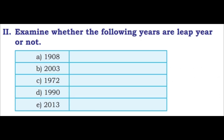Second question: Examine whether the following years are leap years or not. First: 1908 — 8 is divisible by 4, so it is a leap year. Second: 2003 — 3 is not divisible by 4, so it is not a leap year. Third: 1972 — last two digits 72 are completely divisible by 4, so it is a leap year. Fourth: 1990 — 90 divided by 4 leaves a remainder, so it is not a leap year. Fifth: 2013 — 13 is not divisible by 4, so it is not a leap year.